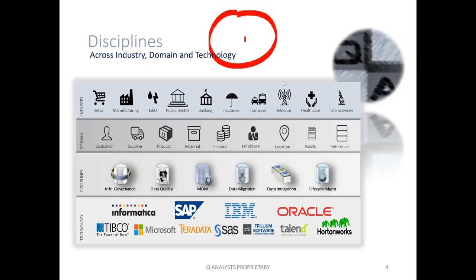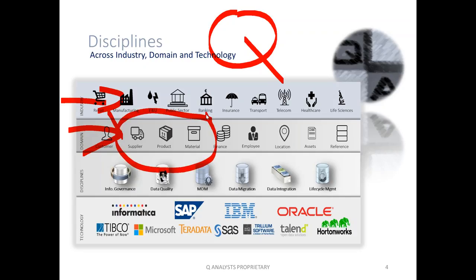What does QAnalyst actually do? If you're talking about industries, we cross all industries — retail, manufacturing, energy and utilities, public sector, banking, insurance, transportation, telecom, healthcare, life sciences — because when you come down to it, BI and data all works the same. Looking at the domains we care about: customer, supply chain, supplier, product and material, finance across all companies, and reference data as an asset. We play in a lot of companies and areas within those companies.